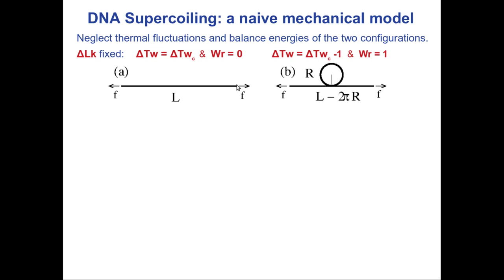Now I assume that in this molecule I also apply a linking number at the two ends: I take one end and rotate it with respect to the other. Imagine you have a bead on one side, the molecule is always straight (no bending fluctuations), and I rotate the two beads. So there is an excess linking number through the application of a rotation of one side with respect to the other. In situation A, I don't have any writhe contributions — no self-crossings — and therefore all this linking number goes into the twist. The writhe is zero.